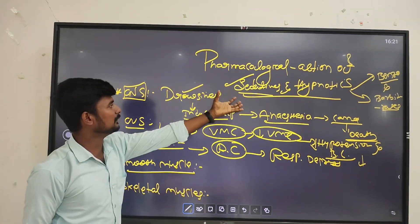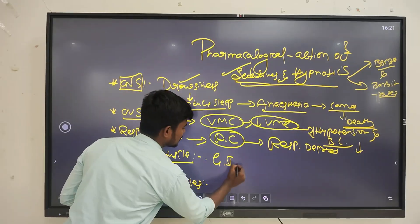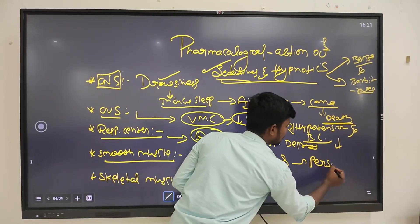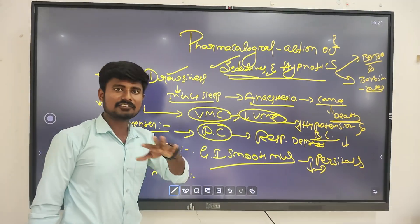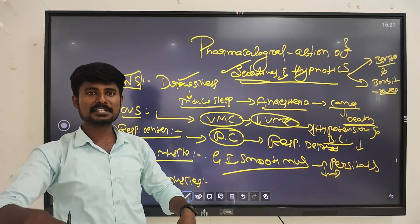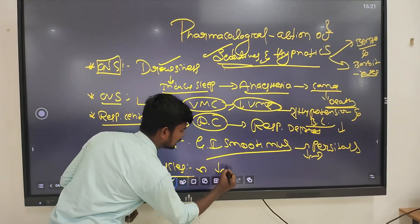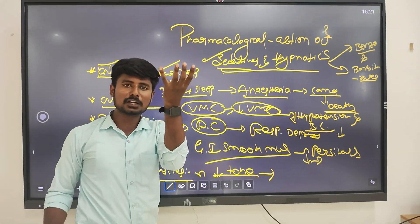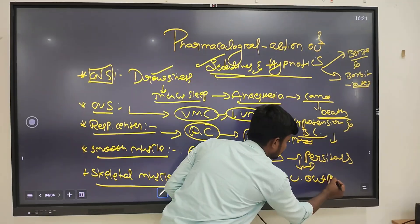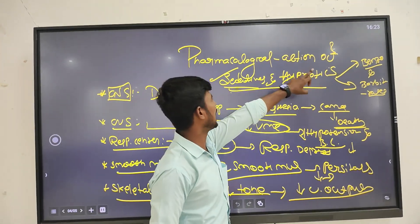Then smooth muscles: when this drug is given, there is relaxation of all body smooth muscles. Especially the GI smooth muscles - there is relaxation of GI smooth muscles, which leads to decreasing peristaltic movement. After administration of this drug, the GI muscles relax and there is a decrease in peristaltic movement, leading to constipation. Regarding skeletal muscles, there is a decrease in the tone of the muscles.